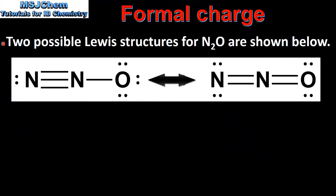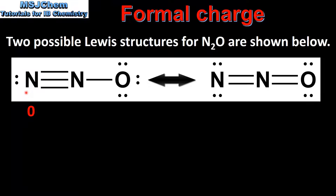In our next example we have two possible Lewis structures for N₂O, which is dinitrogen monoxide. The Lewis structure on the left has one triple bond and one single bond. The Lewis structure on the right has two double bonds. Starting with the Lewis structure on the left, this nitrogen atom has five valence electrons, minus two non-bonding electrons, minus half of six which is three, giving a formal charge of zero.